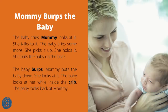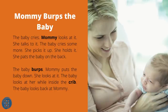Mommy Burps the Baby. The baby cries. Mommy looks at it and talks to it. The baby cries some more. She picks it up, holds it, and pats the baby on the back. The baby burps. Mommy puts the baby down and looks at it. The baby looks at her from inside the crib. The baby looks back at mommy.